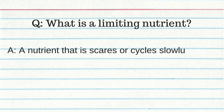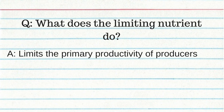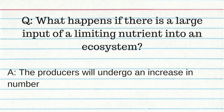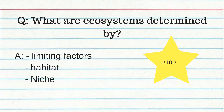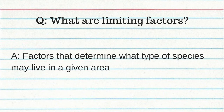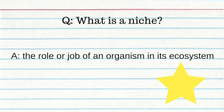What is a limiting nutrient? A nutrient that is scarce or cycles slowly, which limits the primary productivity of producers. If there's a large input of a limiting nutrient in an ecosystem, the producers will undergo an increase in number. Ecosystems are determined by limiting factors, habitat, and niche. Limiting factors are factors that determine what type of species may live in a given area. A niche is the role or job of an organism in its ecosystem.